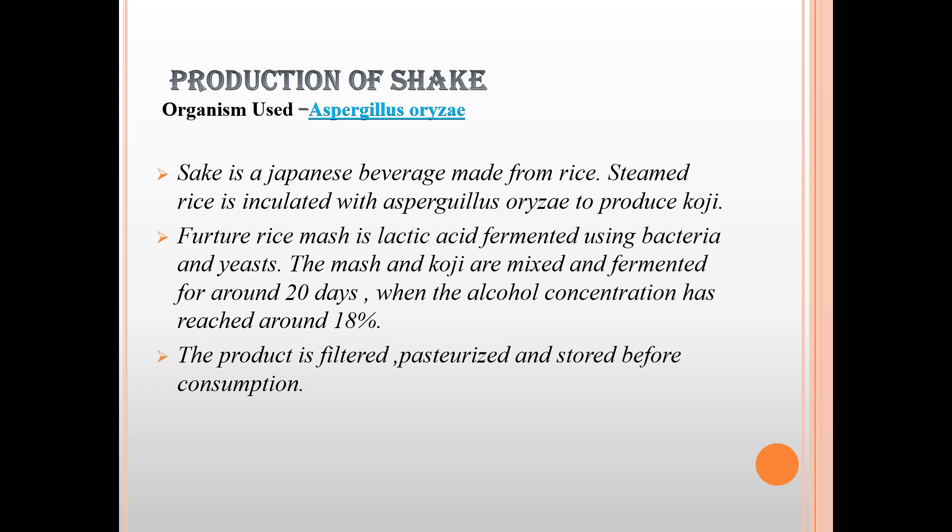In the production of sake, the organism used is Aspergillus oryzae. Sake is a Japanese beverage made from rice. Steamed rice is inoculated with Aspergillus oryzae to produce koji. The rice mash is lactic acid fermented using bacteria. The mash and koji are then mixed and fermented for around 20 days. When the alcohol concentration has reached around 18%, the product is filtered, pasteurized, and stored before consumption.